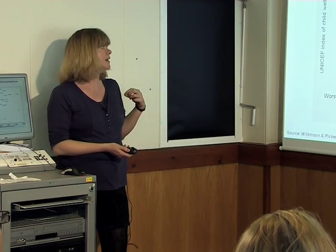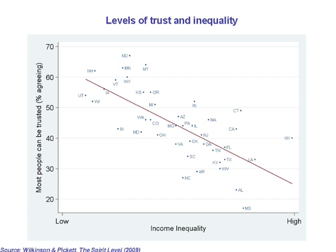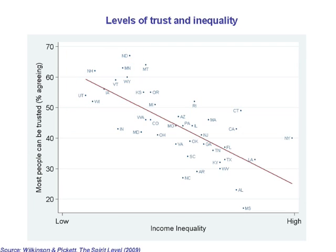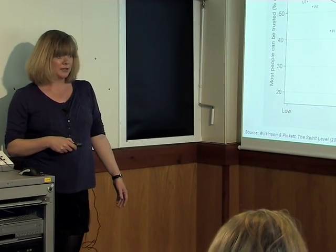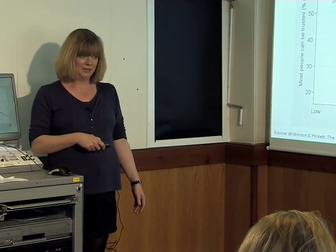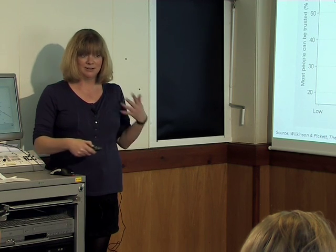I want to take you through some of the individual components of that index. Let's start with trust. This is trust for US states — how many people in each state think other people can be trusted. Up here, around 60% of the population think you can trust other people. Down here, people really don't trust each other. The lowest is Mississippi, at only 16%. And I think we all saw the consequences of that in 2005 when Hurricane Katrina hit New Orleans, and we saw exactly what it means to have a lack of trust among people.